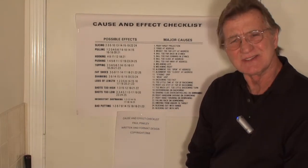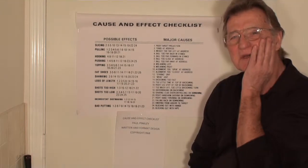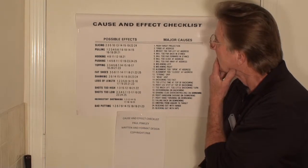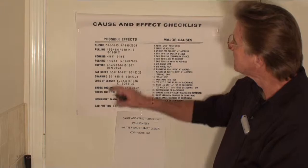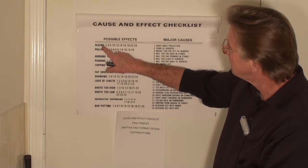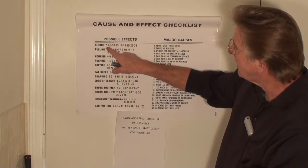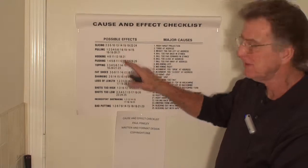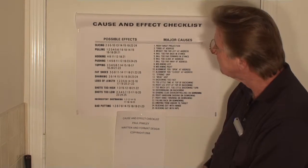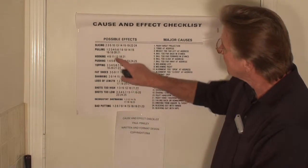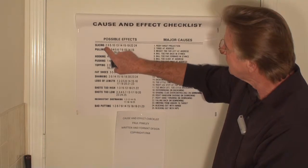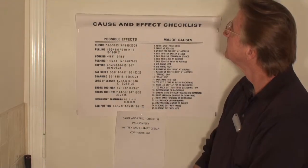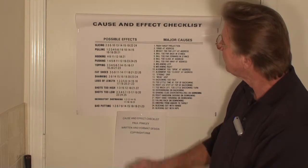And then it sort of dawned on me — man, I've got a big problem here. What happens if my problem lies somewhere within a fractional form of these causes? For example, maybe my problem is one-half of number 2, one-third of number 3.